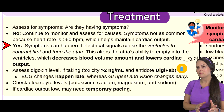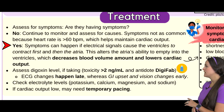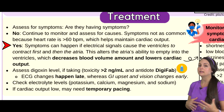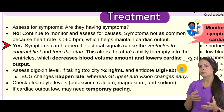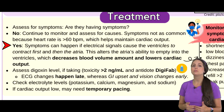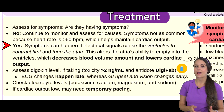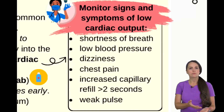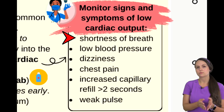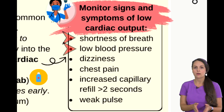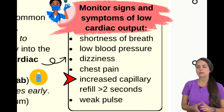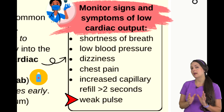If this happens, it causes the atria to decrease in their ability to empty fully into the ventricles, so we're going to have a lower blood volume going into the ventricles, which lowers cardiac output. You want to be monitoring for signs and symptoms associated with lower cardiac output, which can include shortness of breath, hypotension, dizziness, chest pain, increased capillary refill, and a weak pulse.